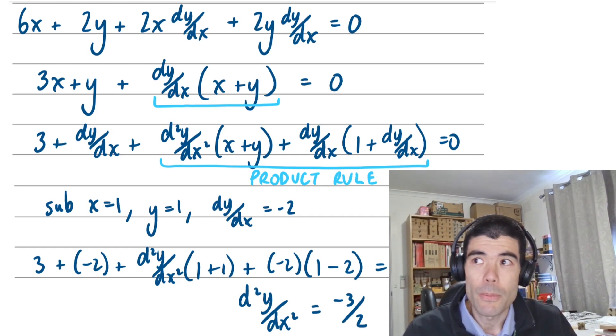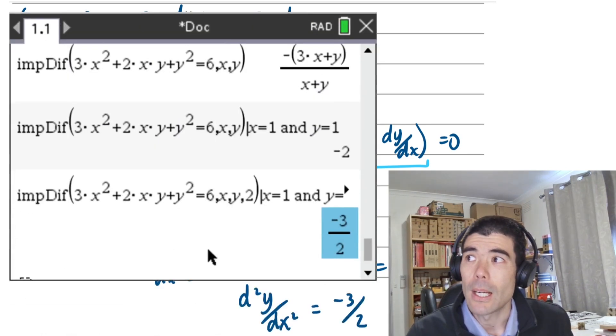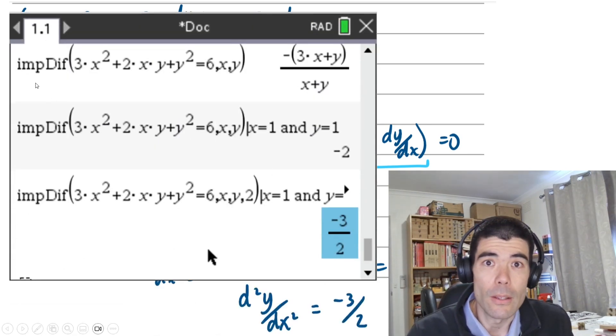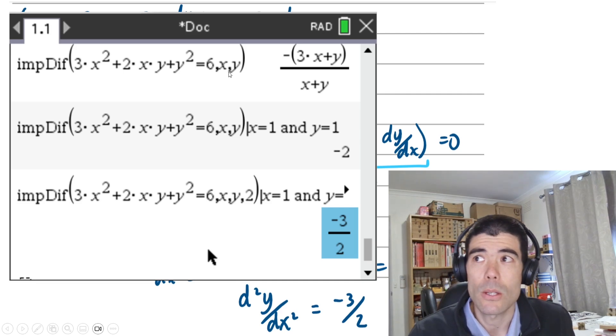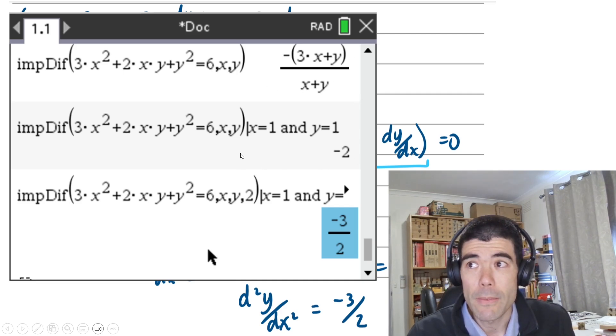Quite a bit of work there, but 5 marks out of exam 1 is quite a lot. This wasn't an exam 1 question, but to bring in the CAS calculator, we can do this under menu calculus implicit differentiation. We just type in the whole equation, comma x, comma y. This will give us dy/dx. If we want to sub in specific values like x is 1, y equals 1, we can do that with the vertical line.